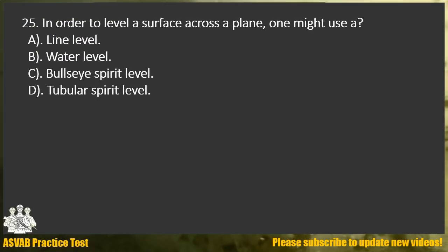Question 25. In order to level a surface across a plane, one might use: A. Line level. B. Water level. C. Bullseye spirit level. D. Tubular spirit level.